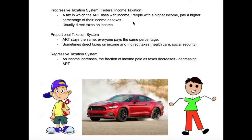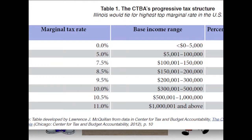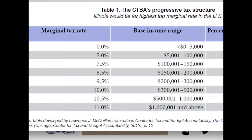rises with your income. So people with a higher income pay a higher percentage of their income as taxes. For example, if you have an income from zero to five thousand dollars you pay zero percent; if your income increases to five thousand to a hundred thousand you pay five percent of that, and as your income increases your marginal tax rate also increases.